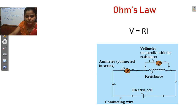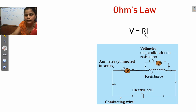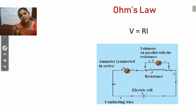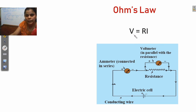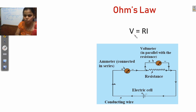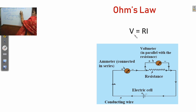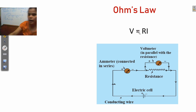If a current I flows through the circuit and the potential difference between the two ends of the conductor is V, then the current flow is directly proportional to the potential difference. From this we get the formula V equals IR. This is Ohm's law.